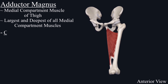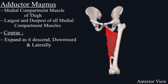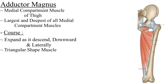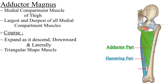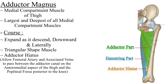After origination, the muscle expands as it descends downward and laterally and becomes a triangular shape. The large gap inferiorly between the hamstring part and the adductor part of the adductor magnus muscle is called the adductor hiatus. This adductor hiatus allows the femoral artery and associated vein to pass between the adductor canal on the anteromedial aspect of the thigh and the popliteal fossa posterior to the knee.